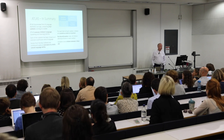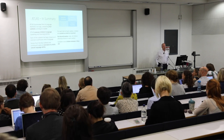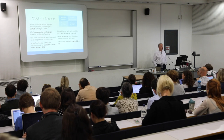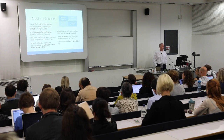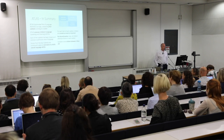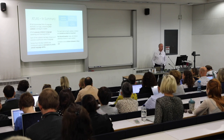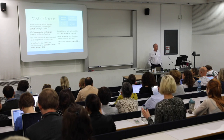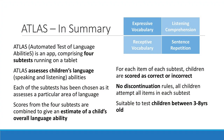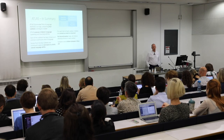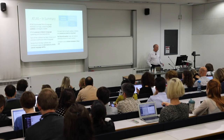ATLAS assesses four different aspects of children's language skills: their expressive vocabulary, their receptive vocabulary, their listening comprehension, and their sentence repetition abilities. Based on the pilot data we've got, this seems to be suitable for kids roughly between the age of three and eight years.